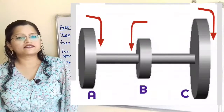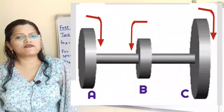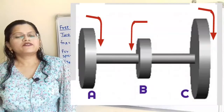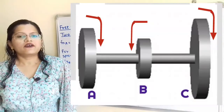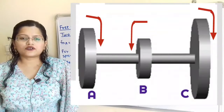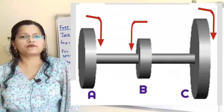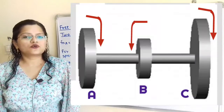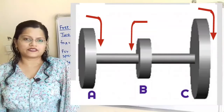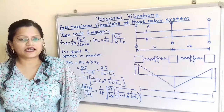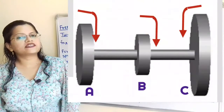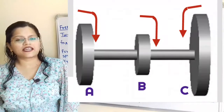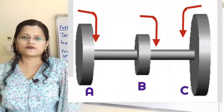Let us understand the concept of free torsional vibration of a three rotor system. There are two cases. In the first case, when the first rotor and third rotor rotate in the same direction and the middle rotor rotates in the opposite direction, it is known as two node frequency. In the second case, when the first two rotors rotate in the same direction and the third rotor rotates in the opposite direction, it is known as one node frequency.